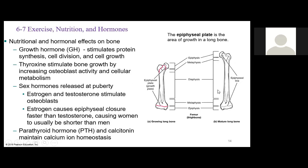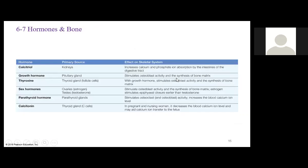The epiphyseal plate, also called the growth plate, is located at both the proximal and distal ends of a bone. While growing, it causes longitudinal growth of the diaphysis, making bones longer. When growth is complete, the epiphyseal plate becomes an epiphyseal line, which appears on X-rays and indicates the person is done growing. Parathyroid hormone (PTH) and calcitonin also help maintain calcium ion homeostasis for bone growth and development.